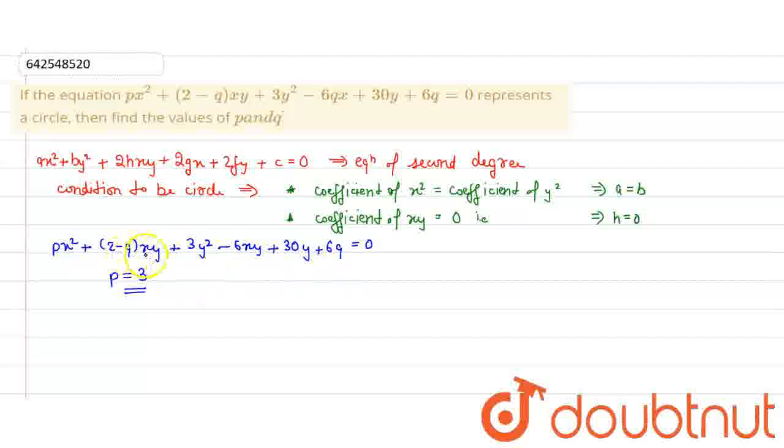And the coefficient of xy (that is h) should be 0, so 2 - q = 0, which gives us q = 2.